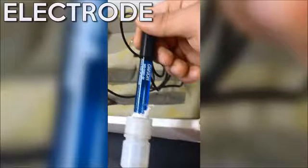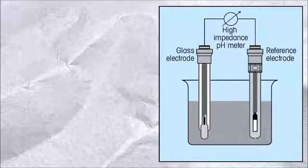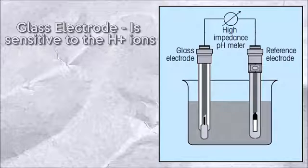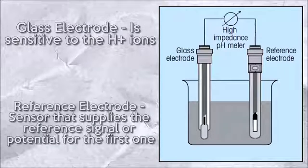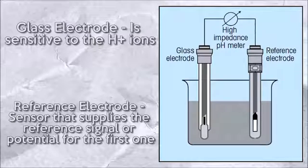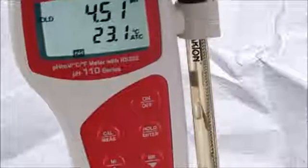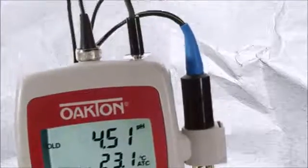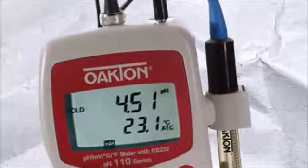This measurement is done by the electrode, which nowadays is combined by two other electrodes. The glass electrode, which is sensitive to the hydrogen ions, and the reference electrode, which functions as a sensor that supplies the reference signal or potential for the first one. This little guy sends the data to the pH meter by a cable and displays it on the LCD screen.